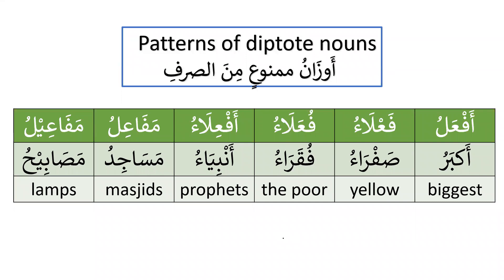Now a special gift: six very important patterns of ممنوع من الصرف (diptotes) that appear frequently in the Quran and Arabic language. We have already learned categories of diptote nouns — prophets' names, men's names ending in alif-noon, women's names, countries and cities. Now we add six patterns. Memorizing all 13 categories will cover almost all cases of ممنوع من الصرف.